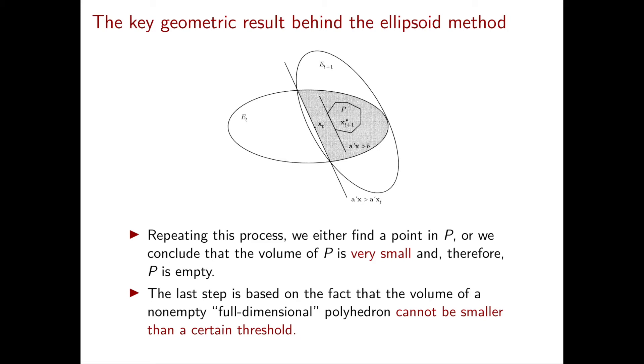Eventually the volume of the ellipsoid becomes so small that it allows us to conclude that it cannot contain any polyhedron and therefore that P is empty.